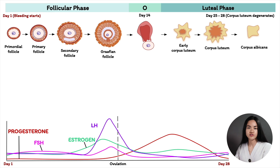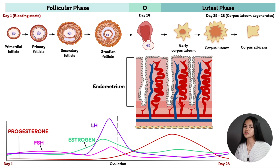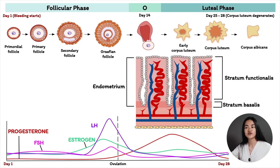Now let's talk about the changes that occur to the endometrium during the menstrual cycle. The endometrium is the inner membrane lining of the uterus. During the menstrual cycle, the endometrium grows to a thick lining filled with blood vessels to prepare for a possible implantation. It can be subdivided into two parts: the deep stratum basalis — the basal layer — and the stratum functionalis, which is the functional and superficial layer. The stratum functionalis is the part of the endometrium that sheds off during menstruation.